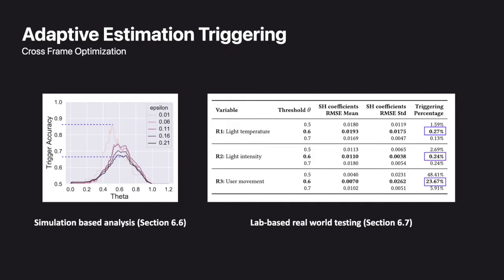In real-world testing, using the optimal system configuration, XIHE can skip approximately at least 76% of estimation requests. This effectively translates to high network and battery efficiency, leaving resources for more intensive graphics tasks.